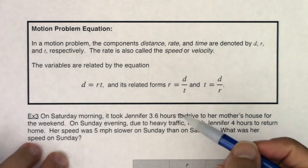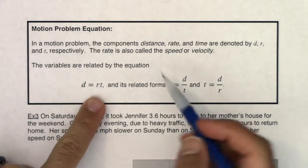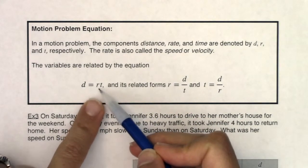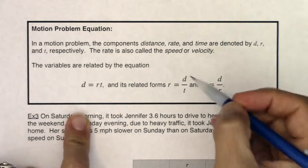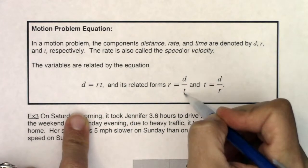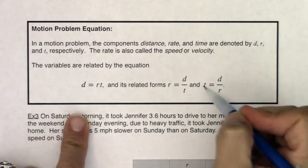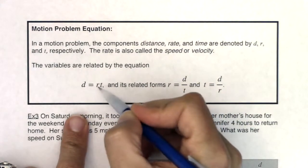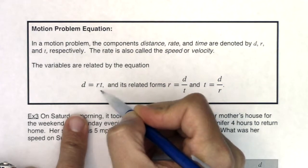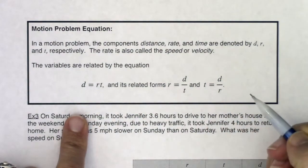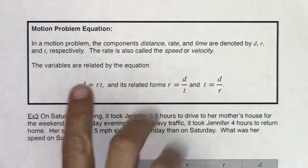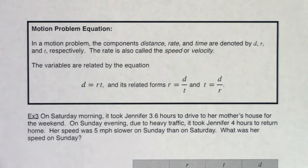Depending on how you want to manipulate this equation, you could solve for r by dividing both sides by t, giving you rate equals distance over time. Or you could solve for t by dividing both sides by r, giving you d over r equals t. But most of the time we're looking at rate times time being equal to distance.